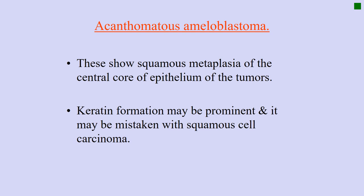The third histological type is acanthomatous ameloblastoma. To recall what we did last time: if this is a follicle, the tall columnar ameloblast-like cells are arranged around the periphery, with stellate reticulum-like cells in the middle, and the ameloblast-like nuclei arranged away from the basement membrane — the typical arrangement of follicular ameloblastoma.